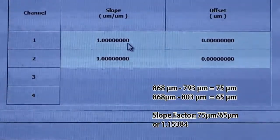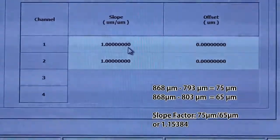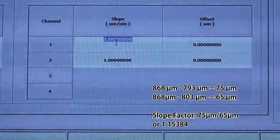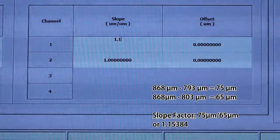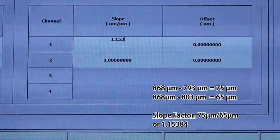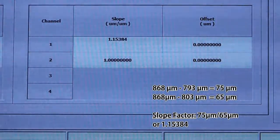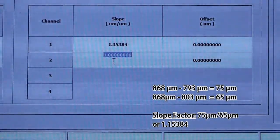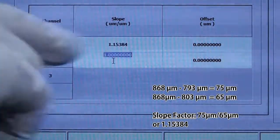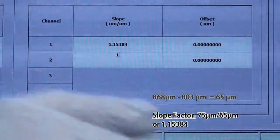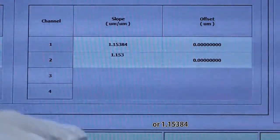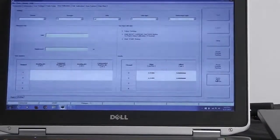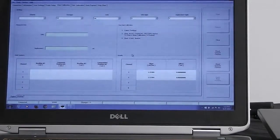What we're going to do is we're going to change these to the new slope factor. So what I do is I double click on this and I key in the sapphire slope factor, 1.15384. That's entered in the channel 1 and channel 2 for both probes, 1.15384. Once those are keyed in, we click on the save new factors button. So our new slope factor is now saved to the system.